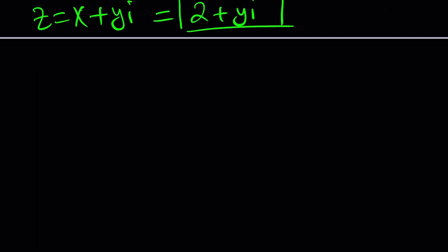For example, if y is equal to 0, you're going to have z equals 2. If y is equal to 1, you're going to get z equals 2 plus i. And then if y is equal to 5, you're going to get z equals 2 plus 5i. So what do all these numbers have in common?